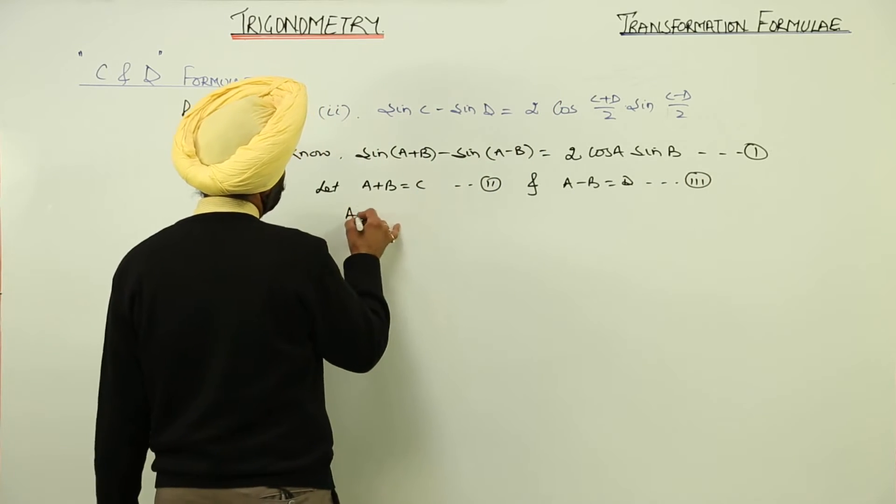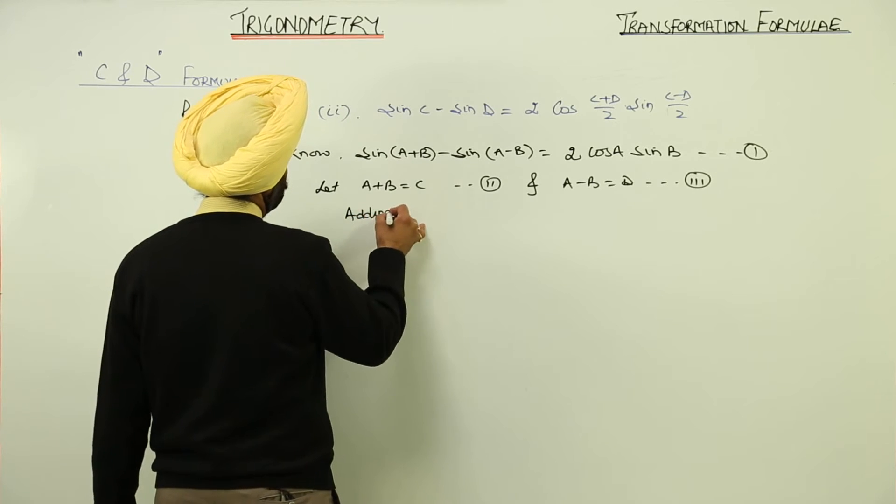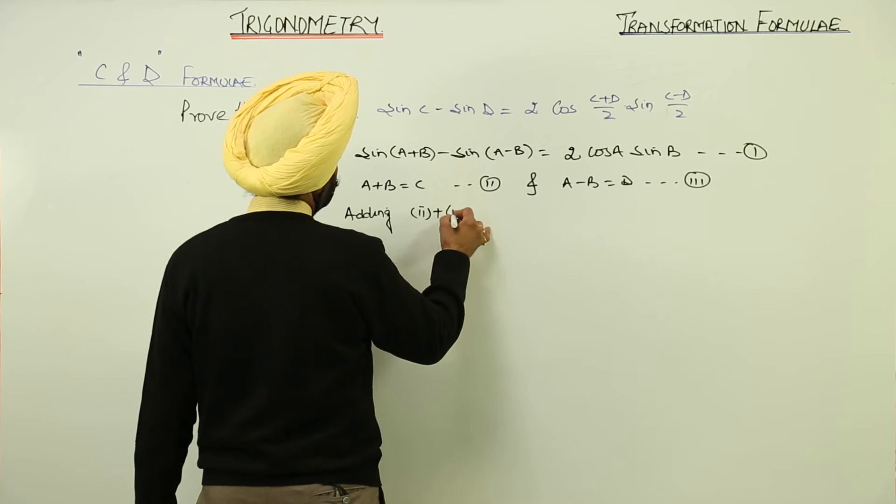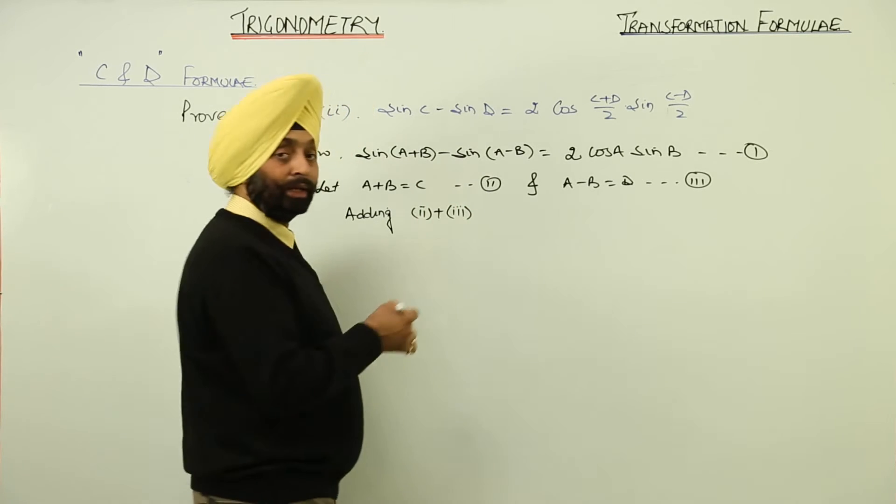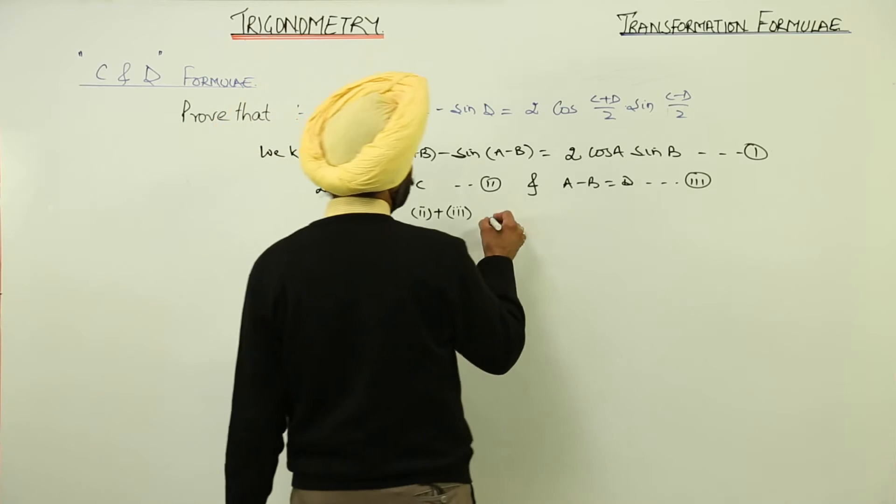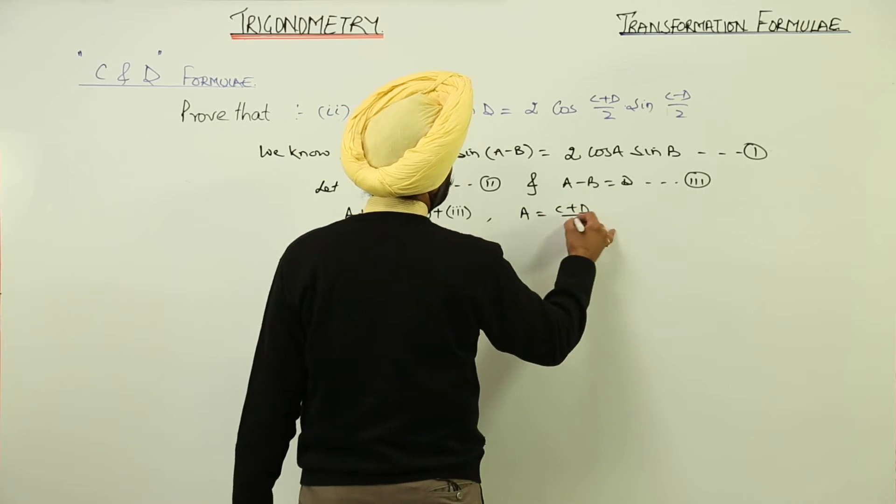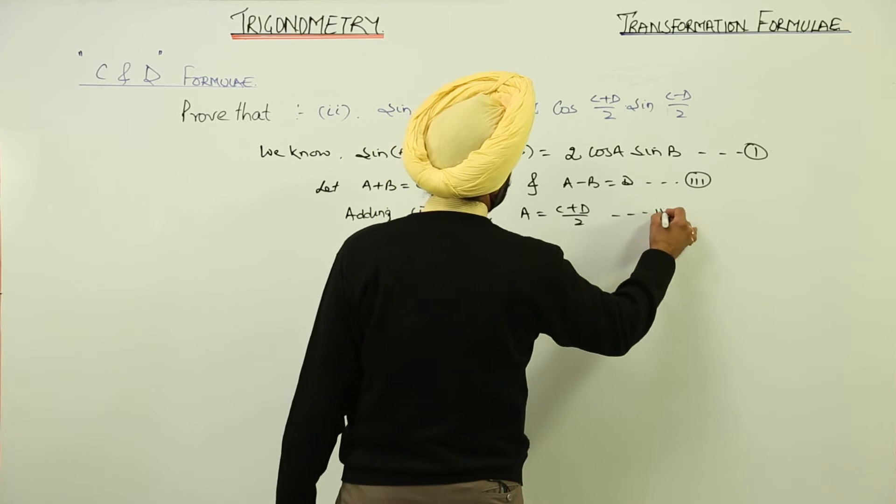Now adding equations 2 and 3, we can write it like this. So what are we having? A = (C+D)/2, equation 4.